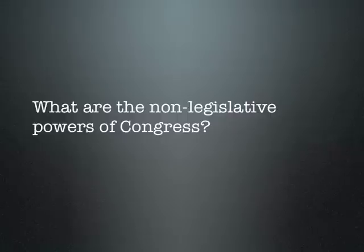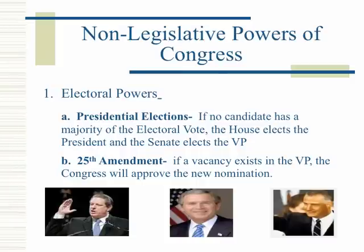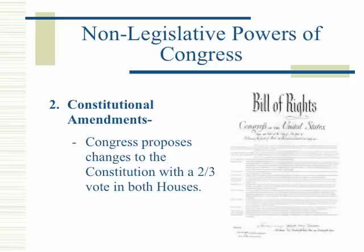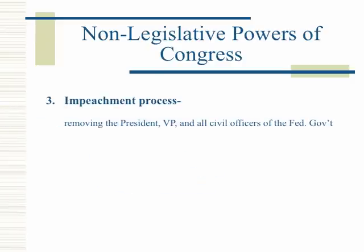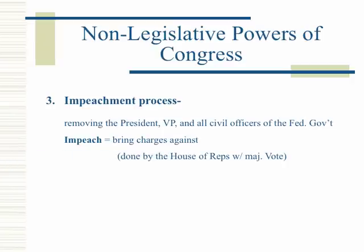What are the non-legislative powers of Congress? Electoral powers: in presidential elections, if no candidate has a majority of the electoral vote, the House elects the President and the Senate elects the Vice President. The 25th Amendment states that if a vacancy exists in the Vice Presidency, Congress will approve the new nomination. Constitutional amendments: Congress proposes changes to the Constitution with a two-thirds vote in both houses. Impeachment process: removing the President, Vice President, and all civil officers of the federal government. Impeach means bringing charges against, done by the House of Representatives with a majority vote. Conviction — innocent or guilty — is done by the Senate with a two-thirds vote.